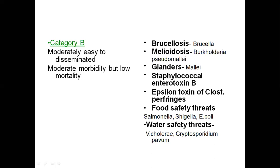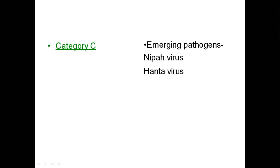Category B also includes food safety threats such as Salmonella, Shigella, and E. coli, and water safety threats such as Vibrio cholerae and Cryptosporidium parvum. Category C represents very mild or emerging pathogens, including Nipah virus and Hantavirus — new viral species with very low appearance or incidence currently.